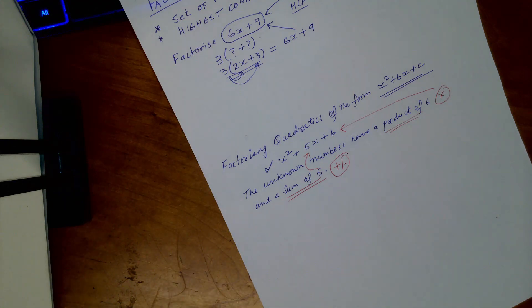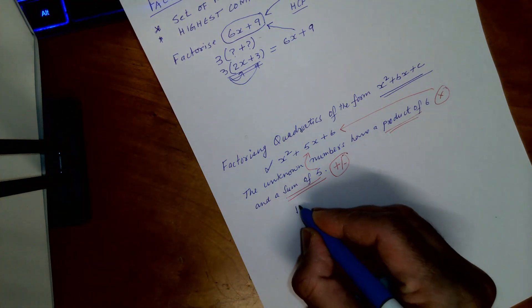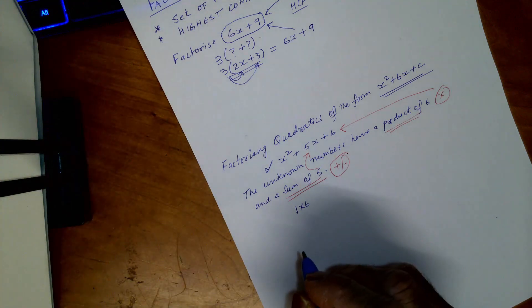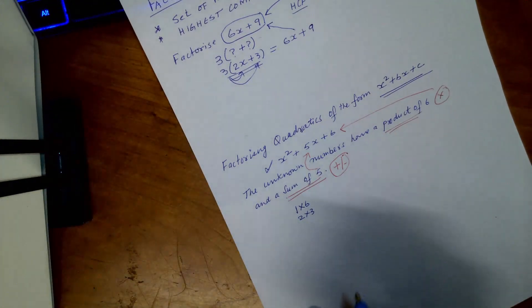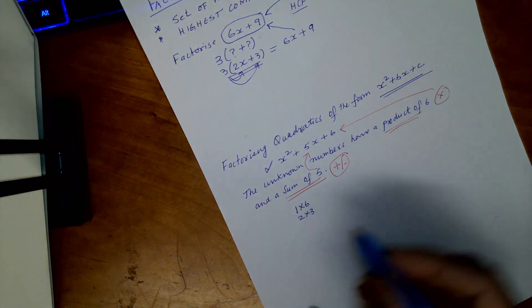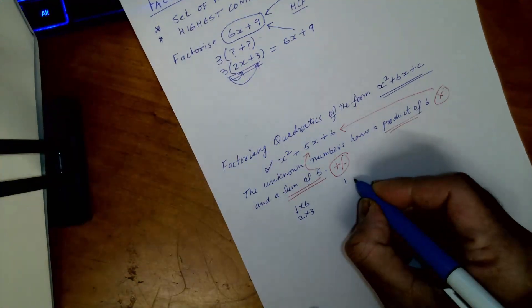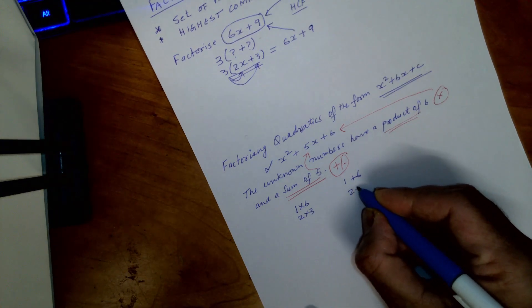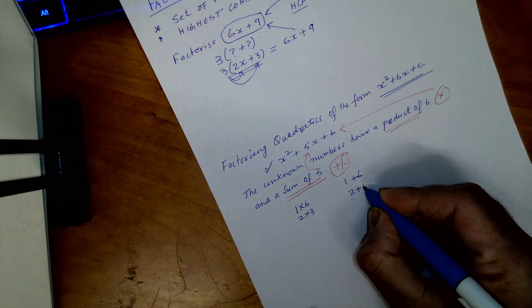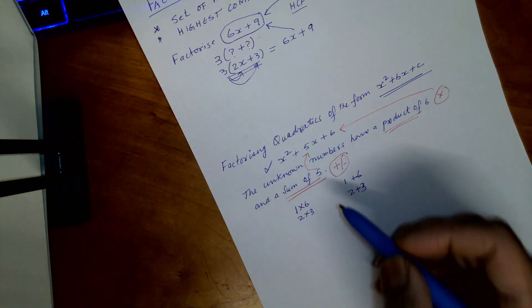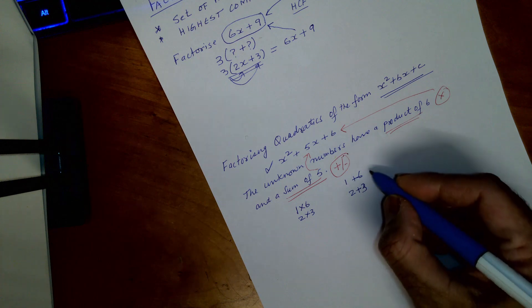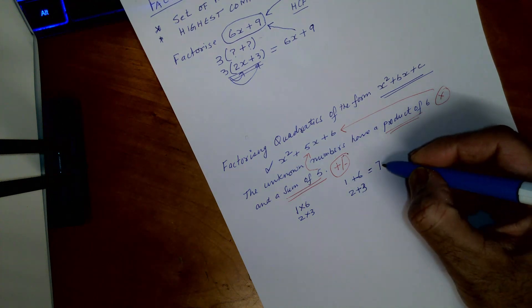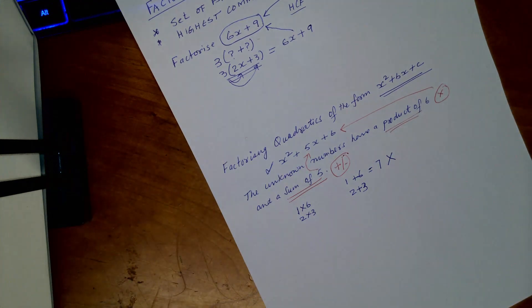So let me just write down the possible numbers. Which you can have is 1 multiply 6, then you got 2 multiply 3. Then with this one you have 1 plus 6. So the possibility of the product of 6 is you have 1 multiply 6 that gives you 6, and if you add this number that gives you 7. We don't need 7 here, we need 5, therefore that doesn't apply.